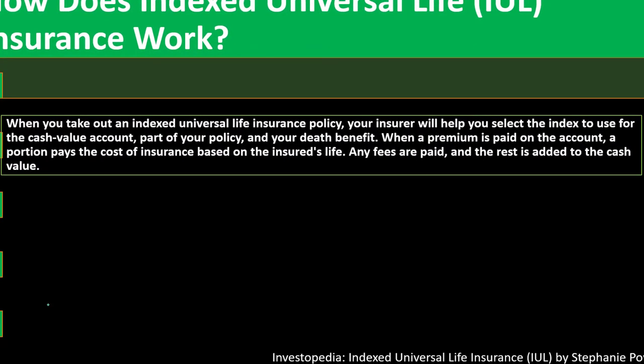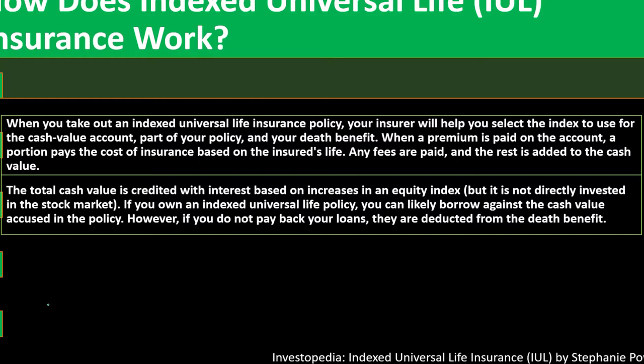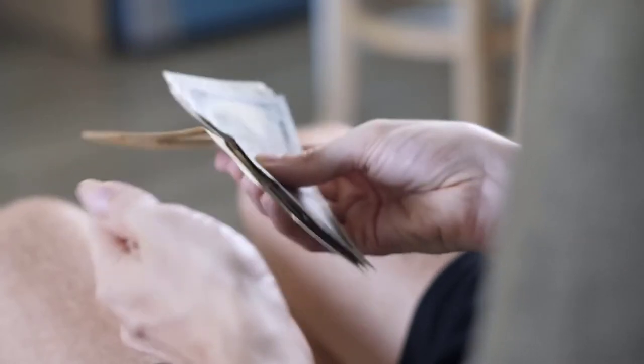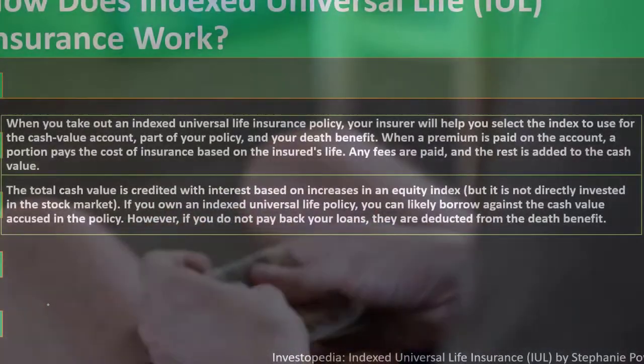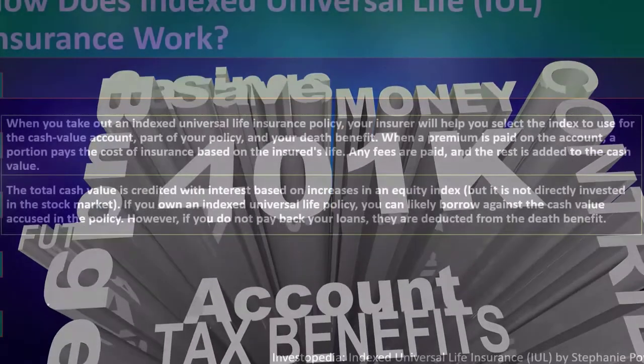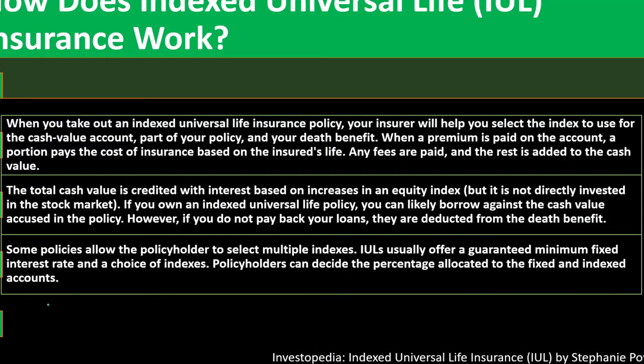How does indexed universal life IUL insurance work? When you take out an indexed universal life insurance policy, your insurer will help you select the index to use for the cash value account part of your policy and your death benefit. When a premium is paid on the account, a portion pays the cost of insurance based on the insured's life. Any fees are paid and the rest is added to the cash value. The total cash value is credited with interest based on increases in an equity index but is not directly invested in the stock market. If you own an indexed universal life policy you can likely borrow against the cash value issued in the policy, which might give you more access to it than if it was locked under the umbrella of a 401k plan or an IRA.